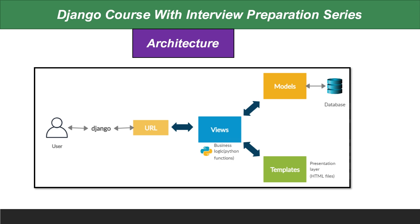The View imports Models so it can access and query all the database information, then sends that information to the Template — the HTML files. The Model provides all the data coming from the database, which the View uses and forwards to the HTML pages. The URL is the entry point: when you hit a particular URL, it identifies which page or functionality runs — home URL runs the home function, add product URL runs the add product function, and so on.